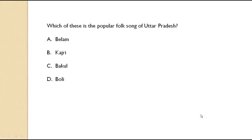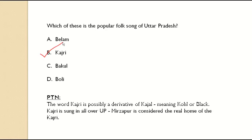Which of these is the popular folk song of Uttar Pradesh? The answer is Kajri. The word Kajri is possibly a derivative of 'Kajal', meaning kohl or black. Kajri is sung all over UP, and Mirzapur is considered the real home of Kajri.